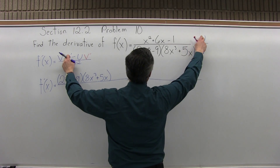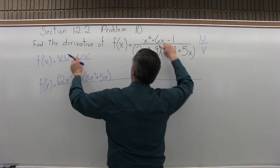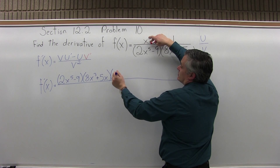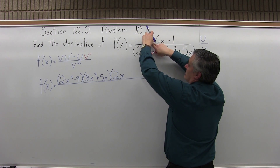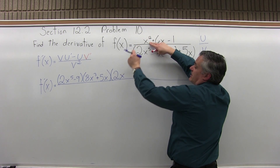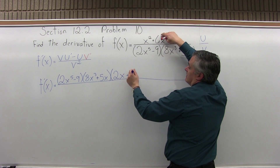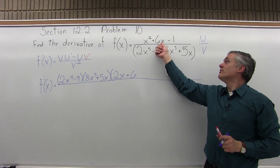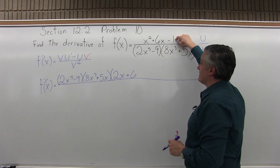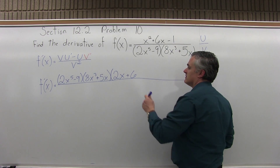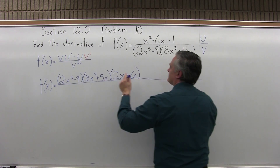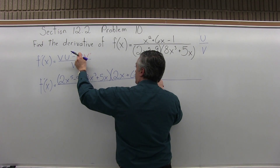So f prime of x equals v — no prime, just v, the denominator — which is 2x to the fifth power minus 9, in parentheses, times 8x to the third plus 5x, also in parentheses. Next is u prime. u is the numerator, so u prime is the derivative of the numerator, which is x squared plus 6x minus 1. The derivative of x squared is 2x to the first — the exponent of 2 comes down times the coefficient of 1, giving 2, and the power drops from second to first.